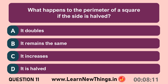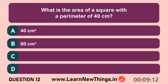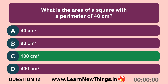What happens to the perimeter of a square if the side is halved? It is halved. What is the area of a square with a perimeter of 40 cm? The side is 10 cm, so the area is 100 cm².